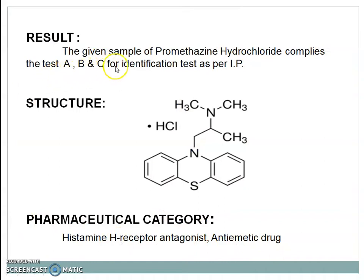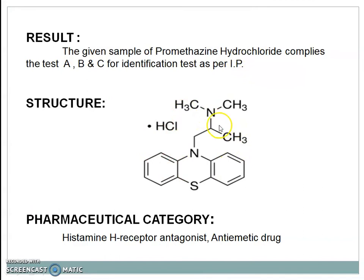Result: the given sample of promethazine hydrochloride complies Tests A, B, and C for identification test as per IP. This is the structure of promethazine hydrochloride. The pharmaceutical category is histamine H1 receptor antagonist and anti-emetic drug.